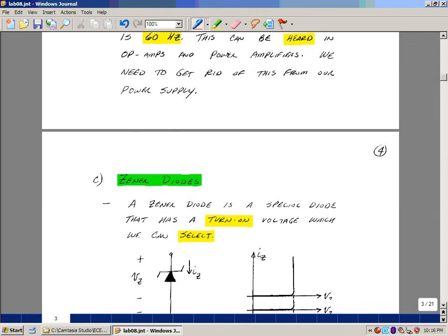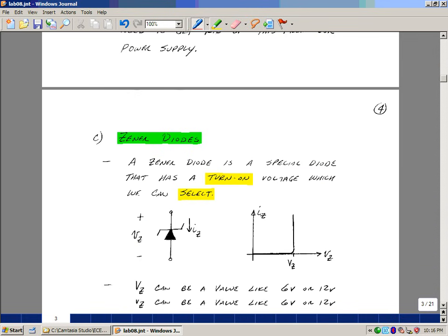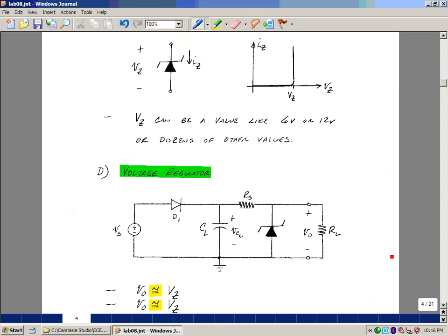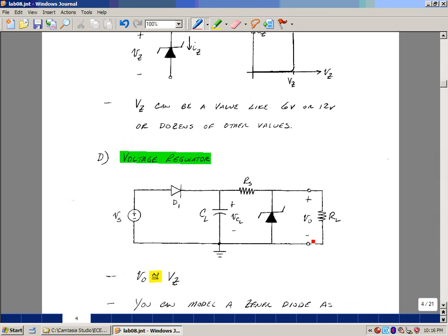A zener diode is like a regular diode except that you can pick the turn-on voltage. So instead of this being like 0.6 volts or 0.7, we can actually pick something like 6 volts or 12 volts or a lot of different values. So I put my zener diode across my load. This is going to force a constant voltage, so I need to drop the difference between the capacitor voltage and the zener voltage across the resistance. If I don't, I'll burn the zener diode out. You can think of the zener diode just like a battery whose value is V sub z. In the lab we're going to make this a 12 volt zener.